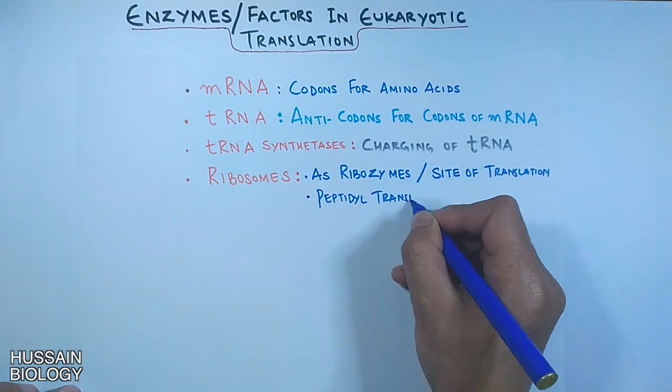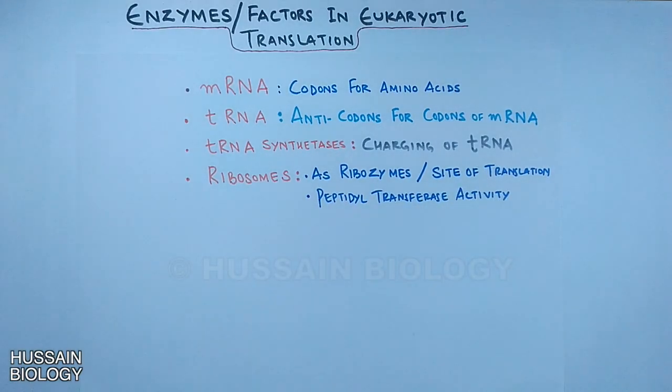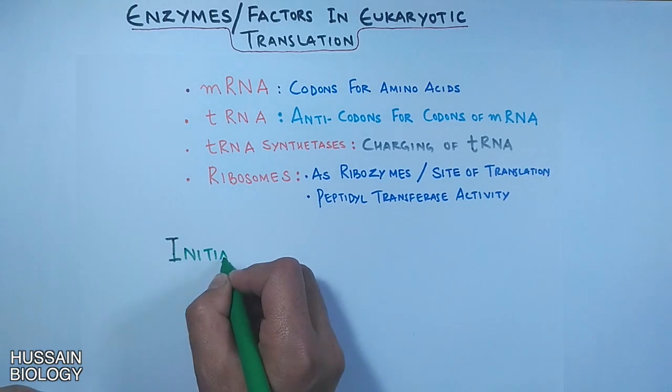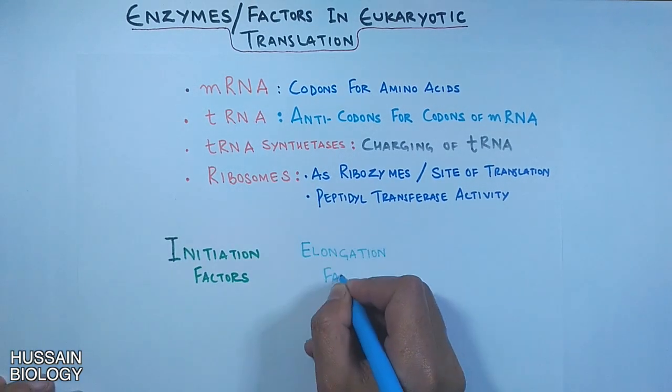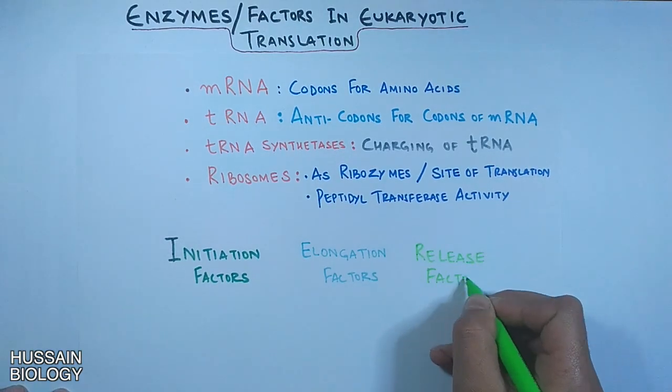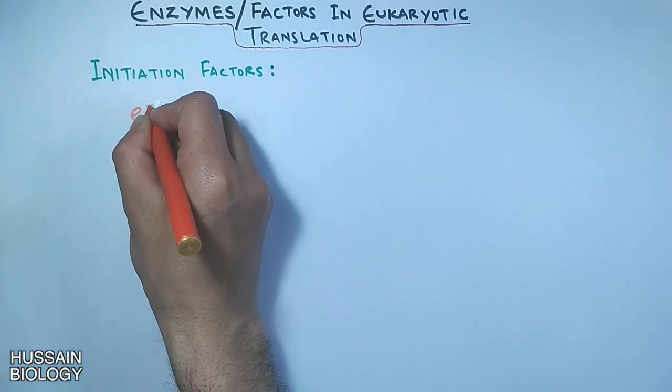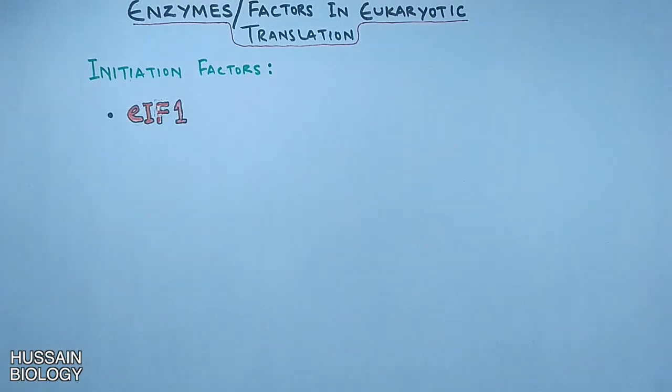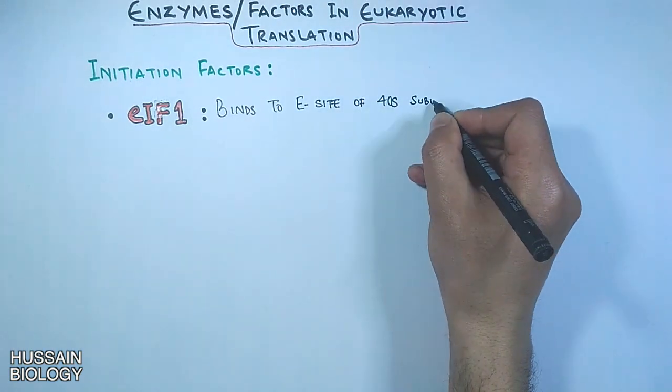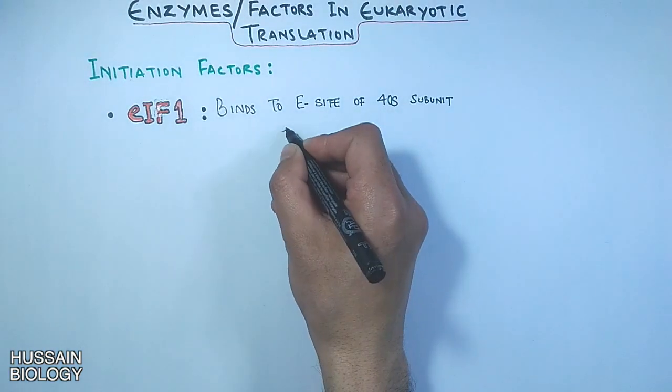Now let's get to the translation factors. We have the initiation factors, elongation factors, and release factors or termination factors. First, let's see what are the initiation factors. The first is EIF1, eukaryotic initiation factor 1. It binds to E site of 40s subunit and also aids in assembly of EIF2, tRNA, GTP, and 40s subunit.